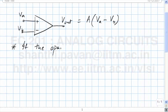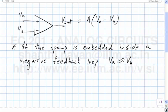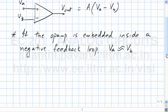If the op-amp is embedded inside a negative feedback loop, then VA will be approximately equal to VB. Now why do I say approximate and not exactly equal? If A is not infinity, then VA minus VB can't be zero — it will be some finite value. In a practical op-amp, VA will not exactly equal VB depending on the value of gain A. It can be a few microvolts, a few nanovolts.